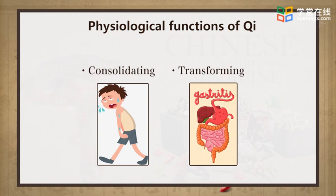For instance, food is transformed into Qi, blood, and body fluid. Body fluid is converted into sweat and urine by metabolizing, and the residues of food are turned into feces to be discharged from the body.